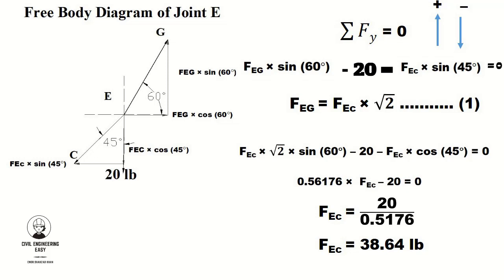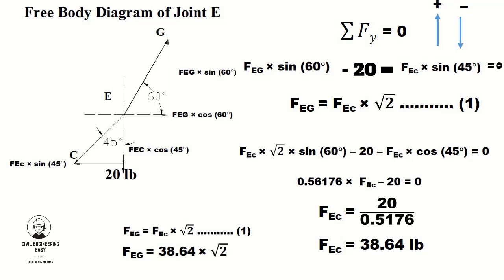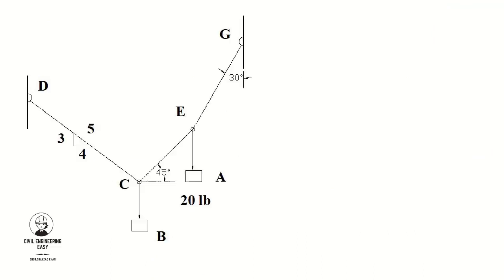Once we find the force in EC, we can find the force in EG using the relation FEG = √2 × FEC. Substituting FEC = 38.64 pounds, by simplification we get FEG = 54.64 pounds. We have now completed the analysis at joint E.